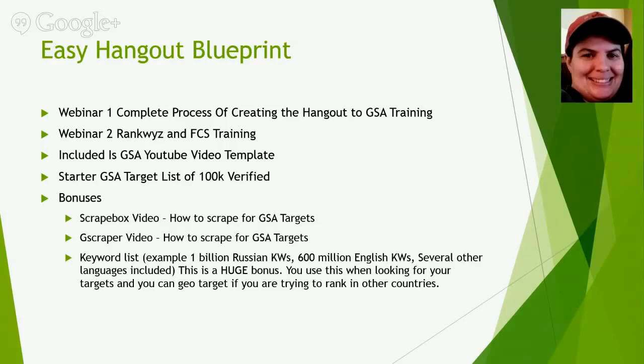The fourth one is a starter GSA list of 100,000 that is verified through my own projects. You would just import it into your own project as a verified list, and then you basically hit start. It's a very simple process.